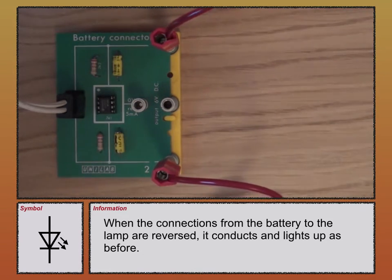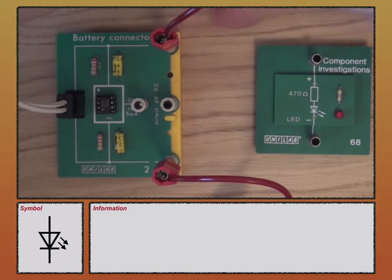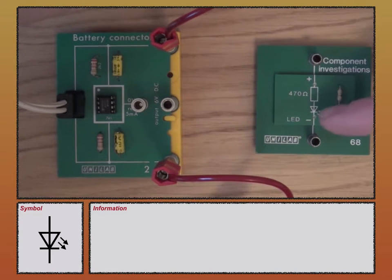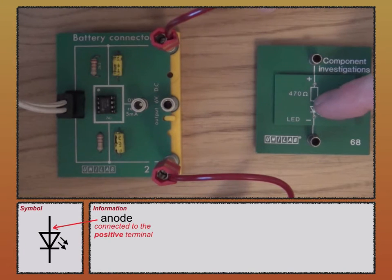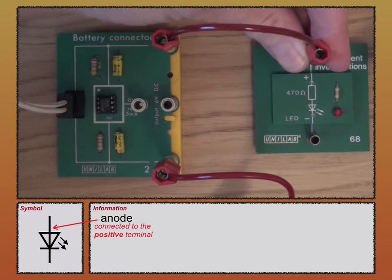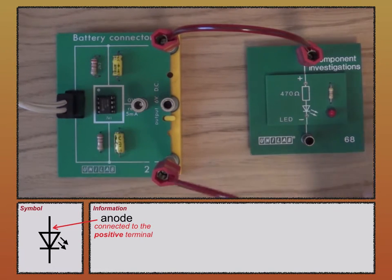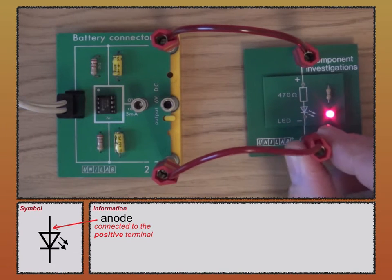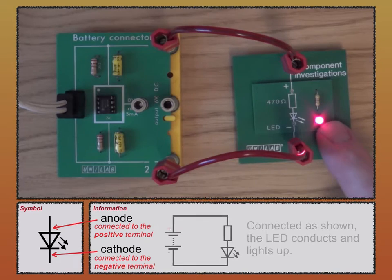Let's compare that with the LED, the light emitting diode. Positive terminal here, I'm actually going to connect it and you'll see this in the diagram on screen at the moment that this end of the LED is known as the anode, it's being connected to the positive terminal, negative terminal here is being connected to the other end known as the cathode. Now, I know that's conducting because the LED is giving out light.